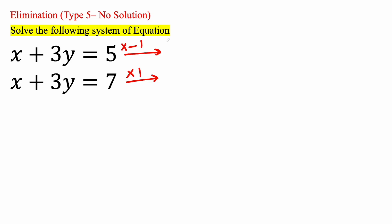So x times negative 1 will give us negative x. 3y times negative 1 will give us negative 3y is equal to 5 times negative 1 will be negative 5. And now for this piece, x times 1 will give us positive x. 3y times 1 will give us a positive 3y is equal to 7 times 1 is 7.